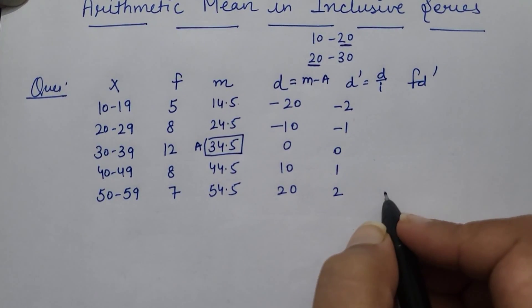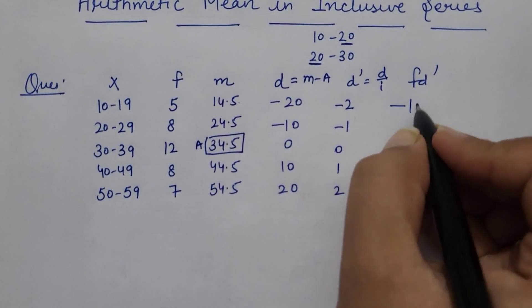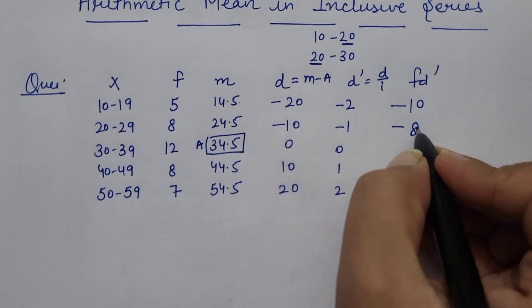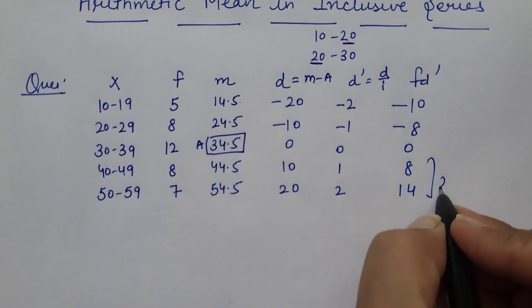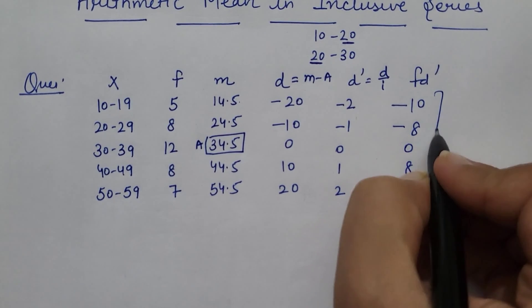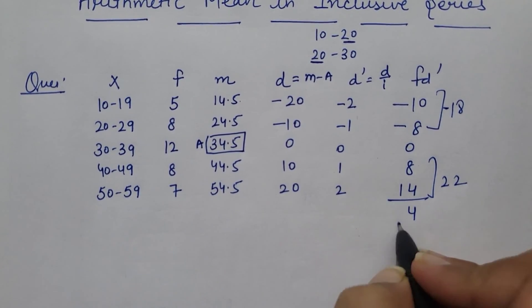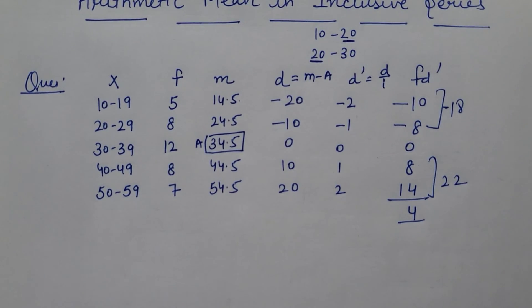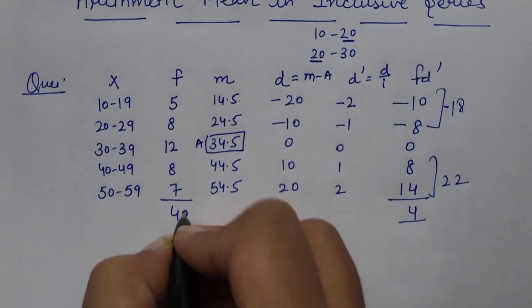And the last is FD dash. Frequency column we will multiply. So FD dash is 4.